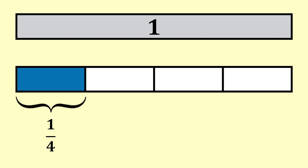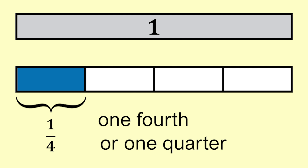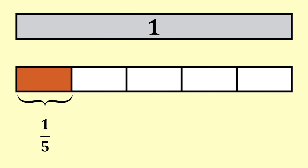One out of four equal parts is one over four or one fourth or one quarter. One out of five equal parts is one over five or one fifth.